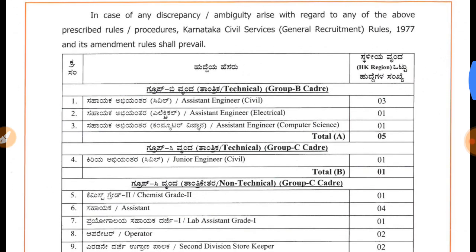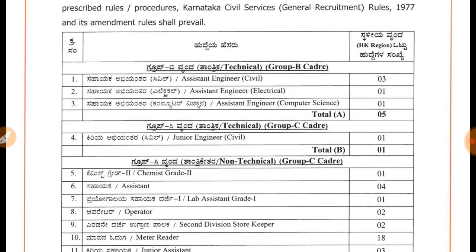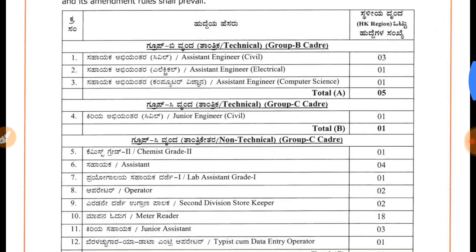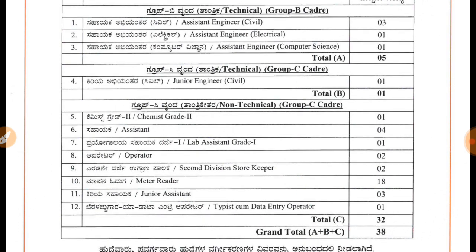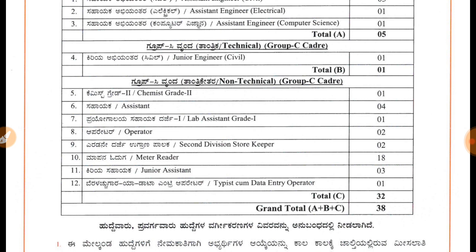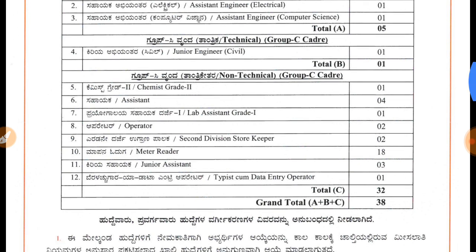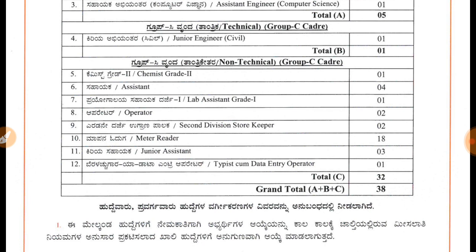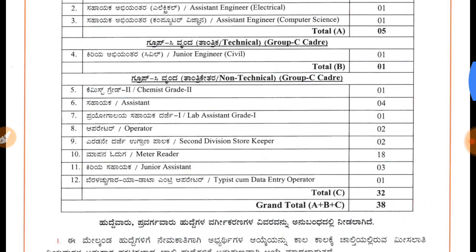Now the posts: for Assistant Engineer Civil there are 3 posts, Assistant Engineer Electrical 1 post, Assistant Engineer Computer Science 1 post — total 5 Group B cadre posts. For Group C, Junior Engineer Civil 1 post. Non-technical Group C posts include: Chemistry Grade 1, Assistant 4, Lab Assistant Grade 1, Operator 2, Second Division Storekeeper 2, Meter Reader 18, Junior Assistant 3, Typist-cum-Data Entry Operator 1. Total vacancies: 38.